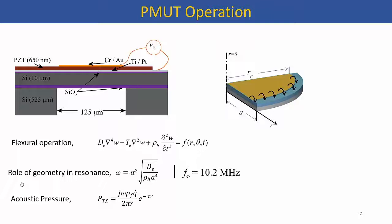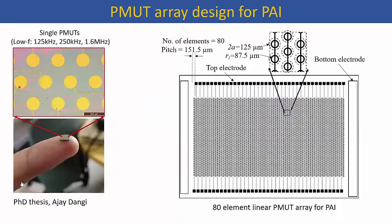We fabricated PMUTs with 125 micron diameter, 10 micron silicon as the passive layer, and around 650 nanometer thick PZT as the active layer. The expected in-air resonance is around 10 megahertz, but underwater there is some frequency shift. The array design has 80 elements; each element is a linear combination of multiple PMUT cells. Individual PMUT cells are 125 microns and placed in staggered arrangements to achieve as high a fill factor as possible, giving around 150 micron pitch from one element to the next.